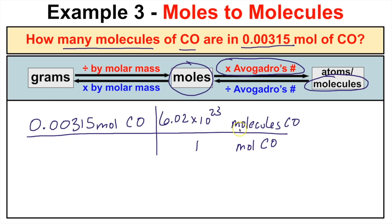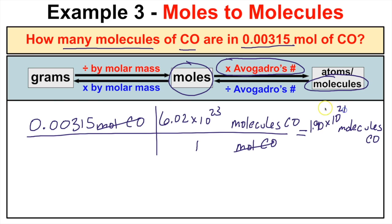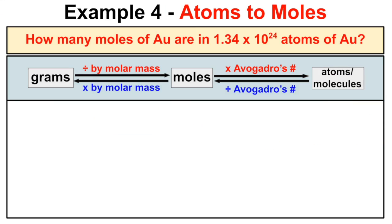We put Avogadro's number on the top of the conversion statement. Moles of CO on the bottom cancels with moles of CO, leaving us with molecules of carbon monoxide. We take 0.00315 times 6.02 × 10²³ and end up with 1.90 × 10²¹. So 0.00315 moles of carbon monoxide contains 1.90 × 10²¹ molecules. Let's take a look at another example.